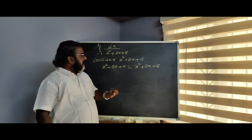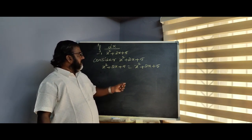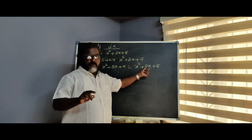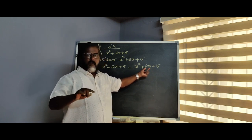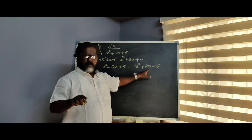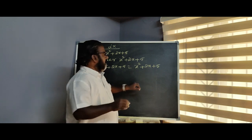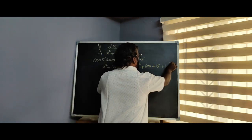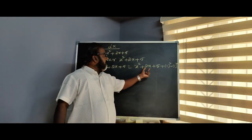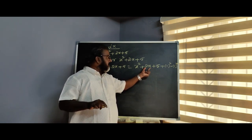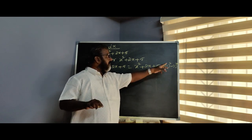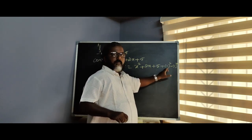We use the completing the square method. Consider x squared plus 2x plus 5. In the completing square method, we take the middle term coefficient, which is 2, divide by 2 to get 1, then add and subtract 1 squared. So we have x squared plus 2x plus 1 squared minus 1 squared.